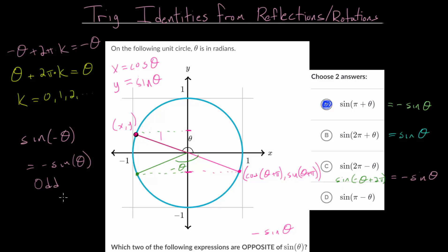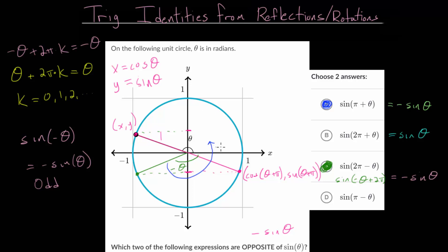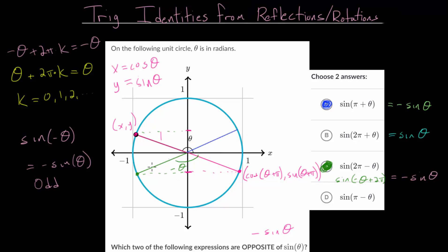Since we've confirmed choice C is correct, we expect choice D to be wrong, but it's worth checking. For negative theta, we add pi radians, going 180 degrees counterclockwise, which forms a straight line with the ray at negative theta. The y value at this new point is the same as the y value for the sine of theta, meaning the sine of pi minus theta simply equals the sine of theta. This confirms that choices A and C are the correct answers.